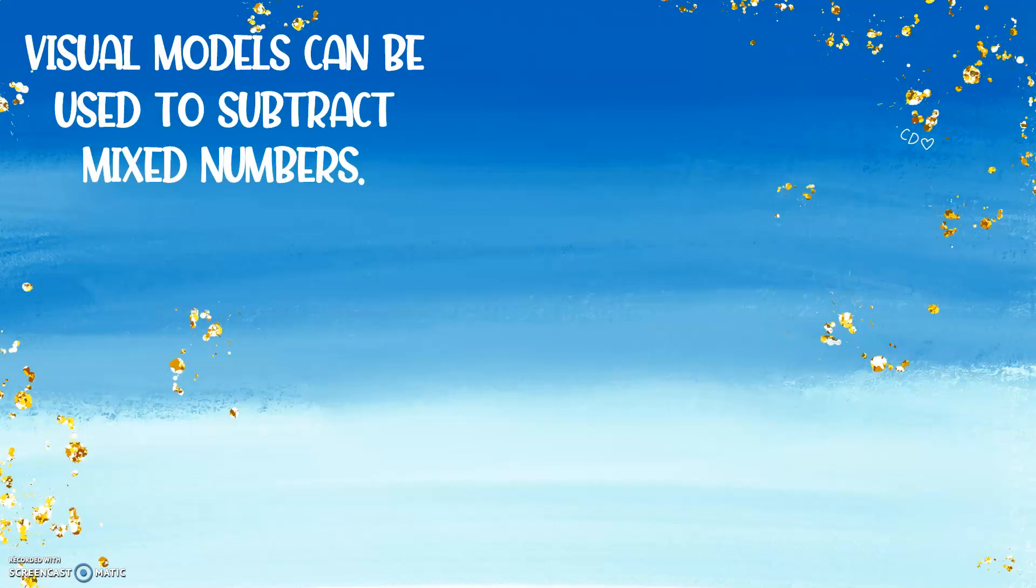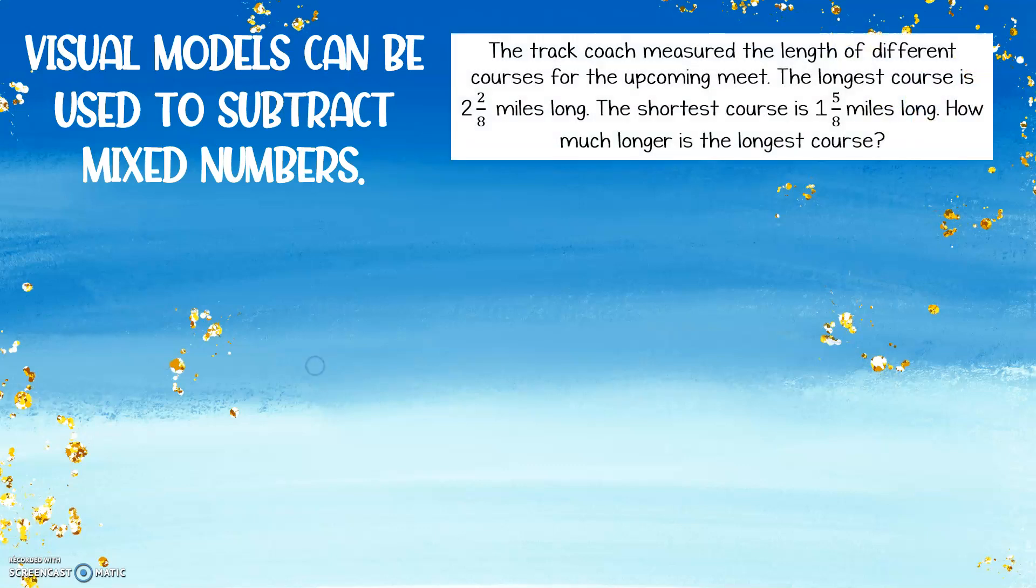Visual models can be used to subtract mixed numbers, so for the examples I'm going to be showing you, we're going to use this word problem. The track coach measured the length of different courses for the upcoming meet. The longest course is 2 and 2 eighths miles long. The shortest course is 1 and 5 eighths miles long. How much longer is the longest course?